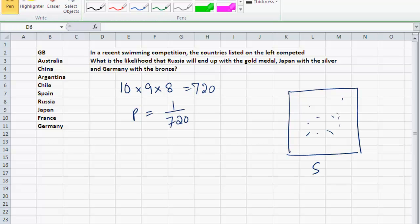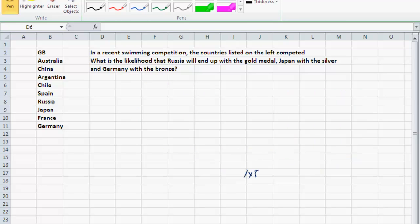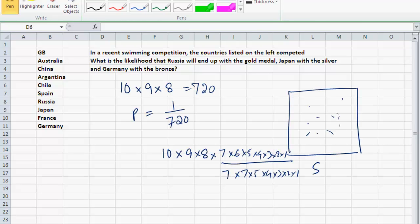To get this 720 permutation, if I take ten times nine times eight, I'll multiply it by one, which will not change anything. I'll multiply it by seven times six times five times four times three times two times one, and then divide it by the same, seven times six times five times four times three times two times one.